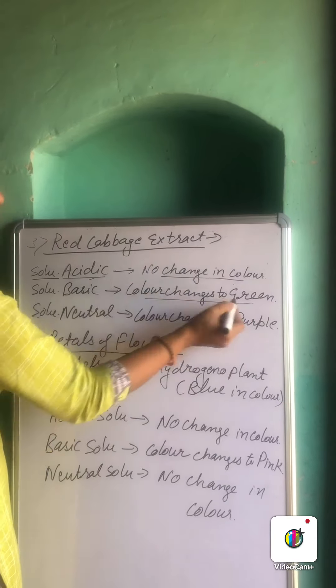The fourth natural indicator is petals of flowers — the colorful parts of flowers. Petals of the hydrangea plant, which are blue in color, are also used as an indicator. If their extract is added to the acidic solution, no color change occurs. If added to the basic solution, the color changes to pink. And if added to the neutral solution, again there is no change in color.